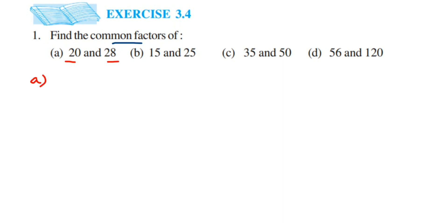Since the numbers they have given us are smaller numbers, we're going to check them from the 1 to 10 table — whether these numbers are divisible or go into the 1 to 10 tables — and then we're going to find out the factors. So I'm going to start with 20.